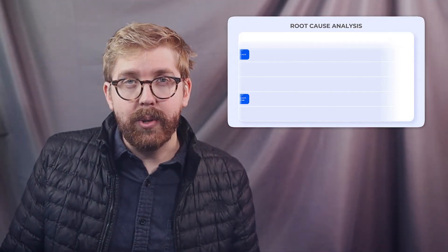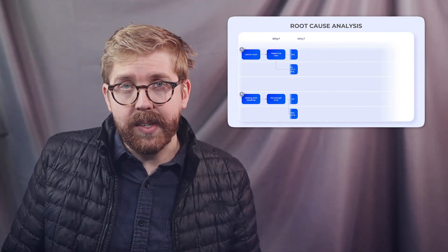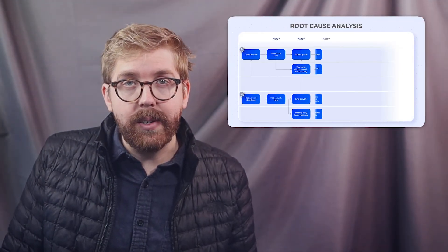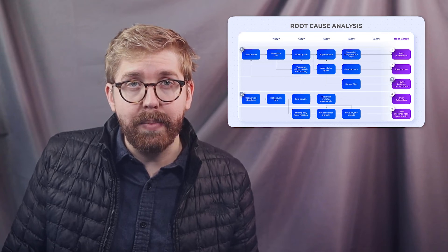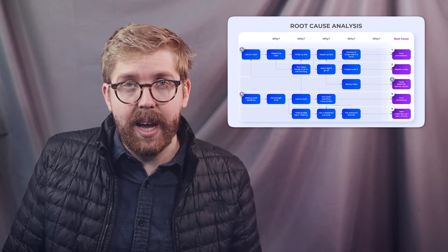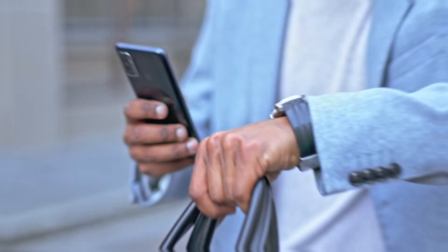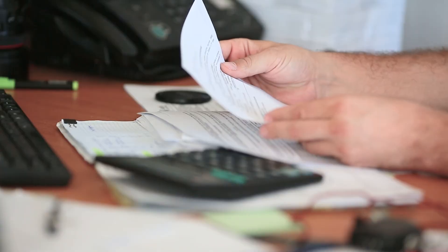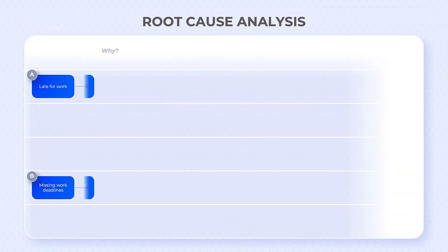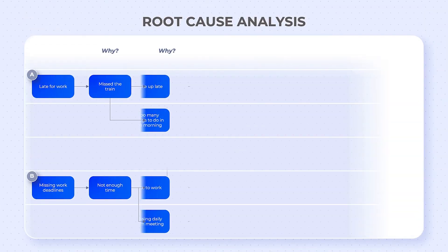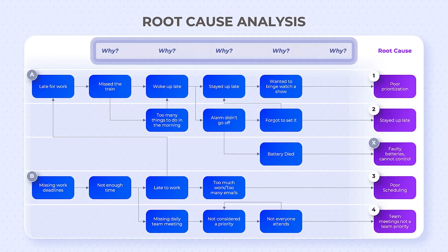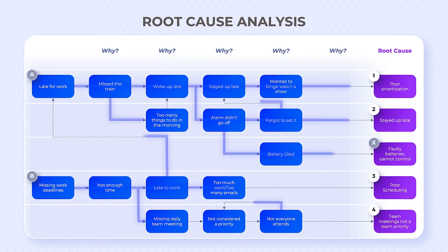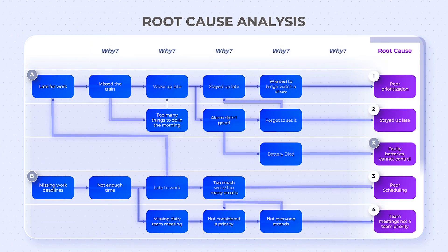Not only can flowcharts be used to improve business processes, but they can also be used as a personal productivity system to improve our personal lives. In most cases, whether it's a personal or business problem, the first thing we blame is not always the root cause. That's why it's recommended to use the 5 Whys methodology to break down the problem and identify the root cause of it all.